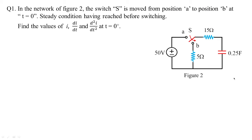Now let us focus on the second problem. The inductor is replaced by a capacitor of 0.25 farads, the resistors are changed to 5 ohms and 15 ohms, and the input voltage source is 50 volts. We need to find the current conditions, the first derivative of current, and the second derivative of current at t = 0 plus. The passive element parameters and source have changed from the previous circuit. Our main intention is to understand the behavior of the capacitor.